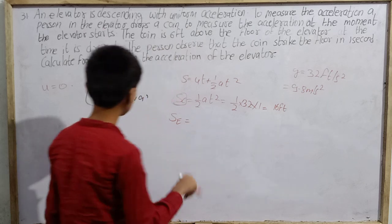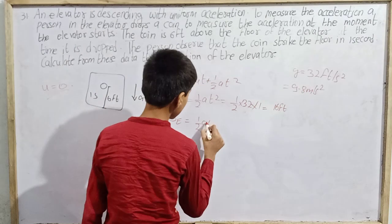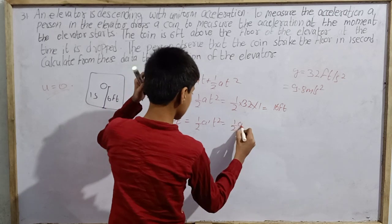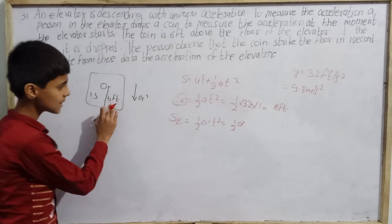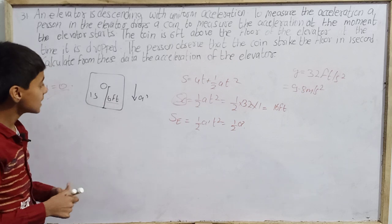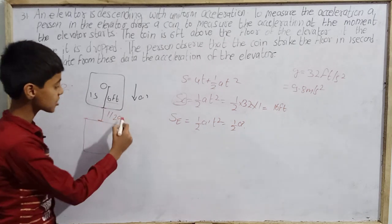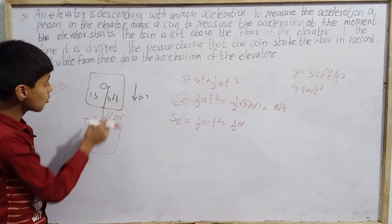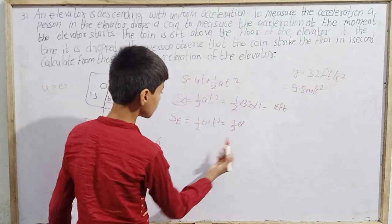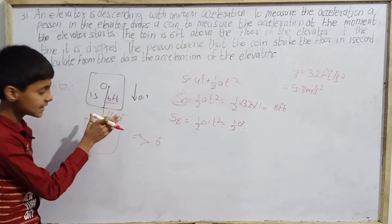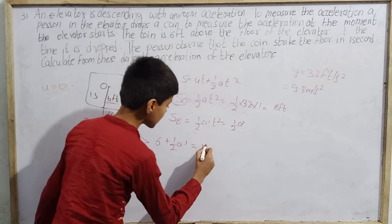Now let us write the same formula for the elevator: the elevator also covers a distance of ½a't² = ½a' in one second, where a' is the elevator's acceleration downward. The coin needs to cover 6 feet plus the distance the elevator has moved — that total must equal 16 feet. So: 6 + ½a' = 16, which gives ½a' = 10, so a' = 20 feet per second square.